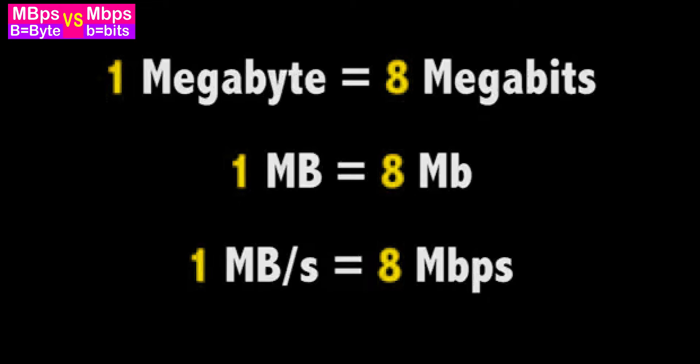If you want to download something, 1 MB of data takes 8 seconds at 1 Mbps speed. At 100 Mbps speed, you divide 100 by 8, which gives you about 12.5 MBps actual download speed. So in 1 second you can download a 12 MB file. There is also a common mistake in understanding internet speed.